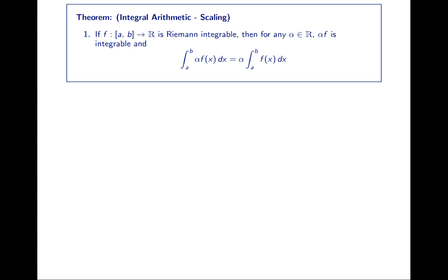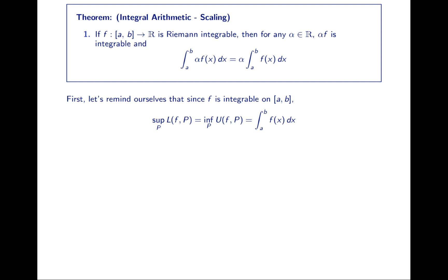If f is integrable, we know what that means. It means the supremum of all the lower sums over every partition equals the infimum of all the upper sums over every partition. There may not be a specific partition for which the lower sum is exactly equal to the upper sum, but they're arbitrarily close. When we see supremum, we can think loosely of the largest lower sum, and the infimum of the upper sum as loosely the smallest upper sum. It's like saying the smallest number in the open interval (0,1) — it has no smallest number, but zero plays a similar role, which is why the concept of supremum and infimum was created.